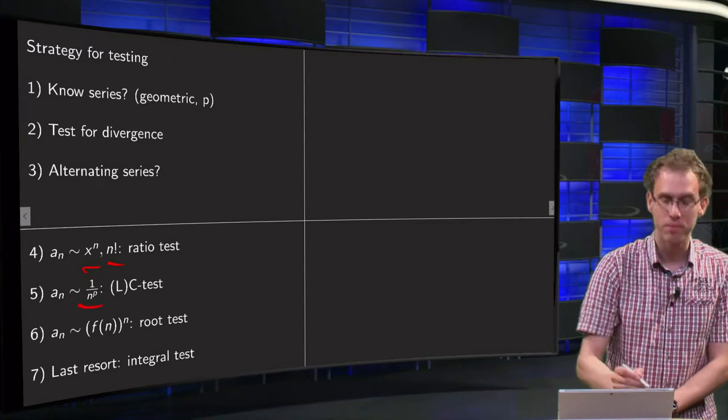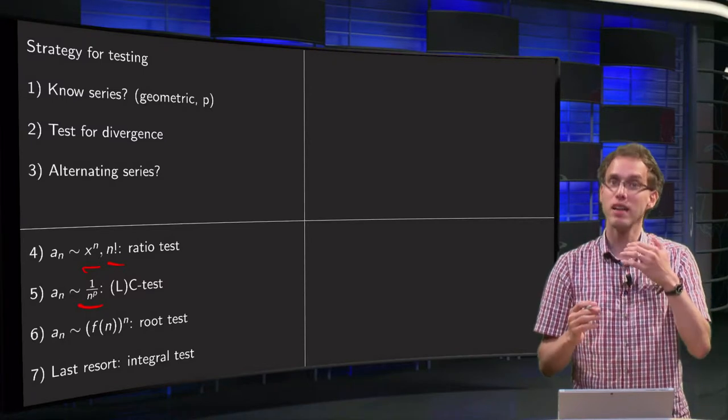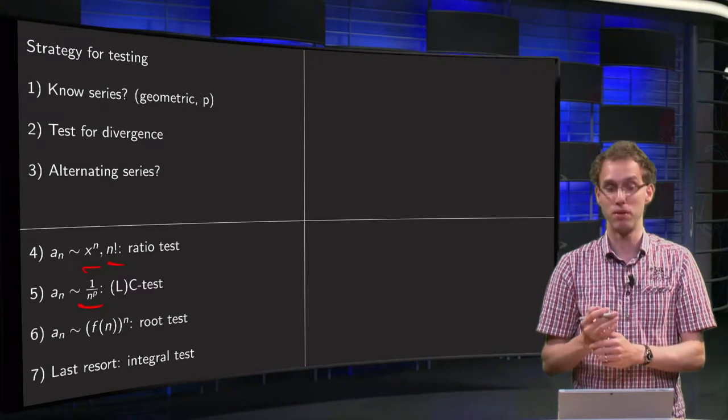If your a(n) behaves like a p-series n to the power p, or if you go very far away, then typically a limit comparison test will work very nicely.